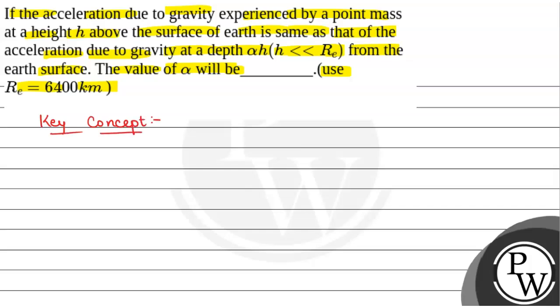The key concept that will be used to solve this question will be acceleration due to gravity at a height h, when h is less than radius of earth, is given by g times (1 minus 2h/R), where h is the height and R is the radius of the earth.